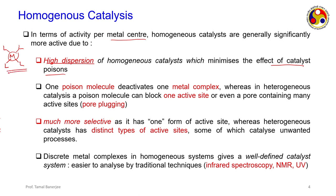In heterogeneous catalysis, a poison molecule can block an active site and also block a pore. If 80% of active sites in a pore are blocked, it is as good as blocking the entire pore - this phenomenon is called pore plugging. On the other hand, homogeneous catalysis is much more selective because you have only one type of atom exposed to the reaction mixture, giving only one type of active site doing one sort of reaction. Heterogeneous catalysts have different active sites depending on pore width and porosity, which may lead to undesired side reactions.